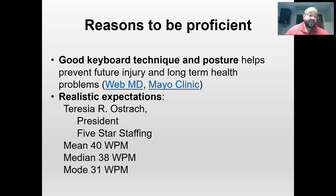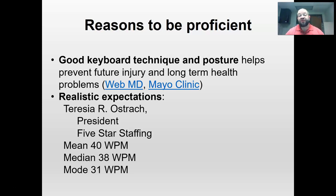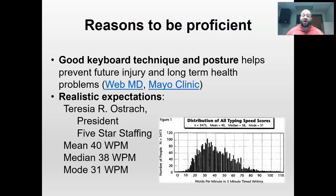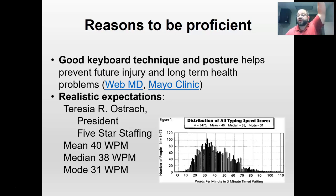She conducted a test with about 3,475 people and found that the average person typed about 40 words per minute — that's with experience. The median was 38, but the mode was 31, meaning most people typed 31 WPM. The average, when you include the fastest and slowest typists, came in right at 40 words per minute. As you can see on the bell curve chart, there are people who type at varying speeds across the distribution.